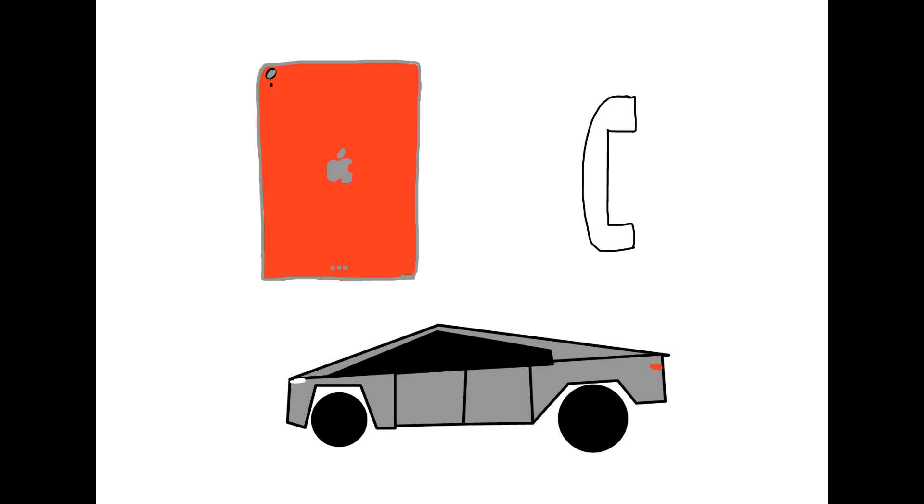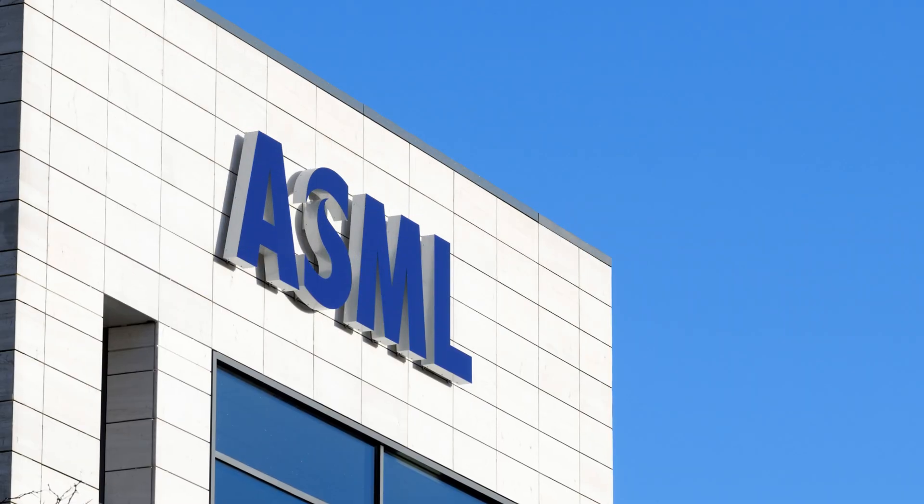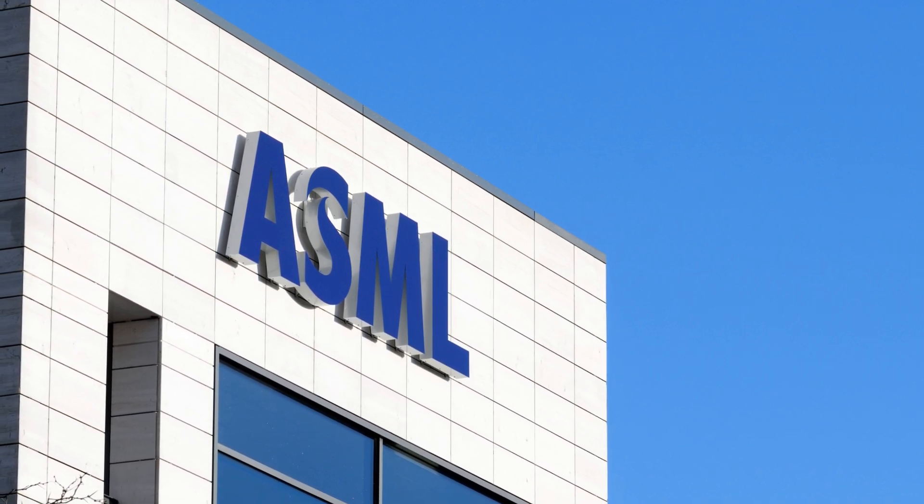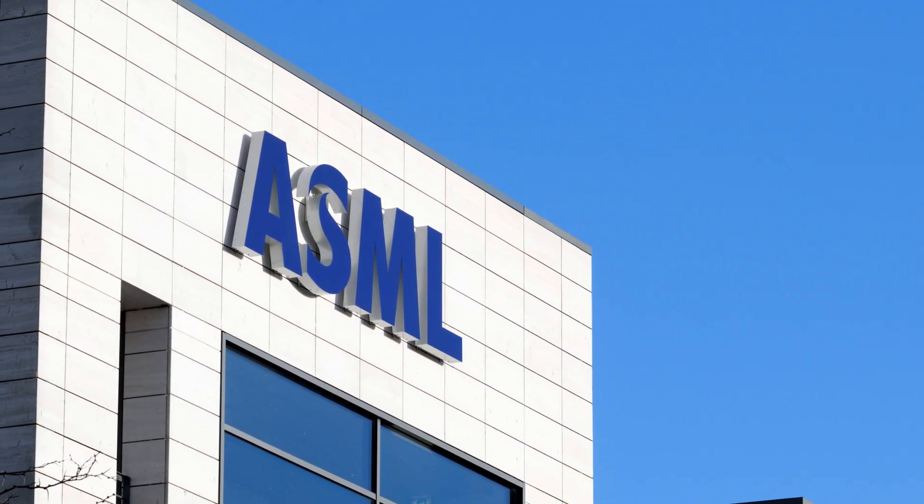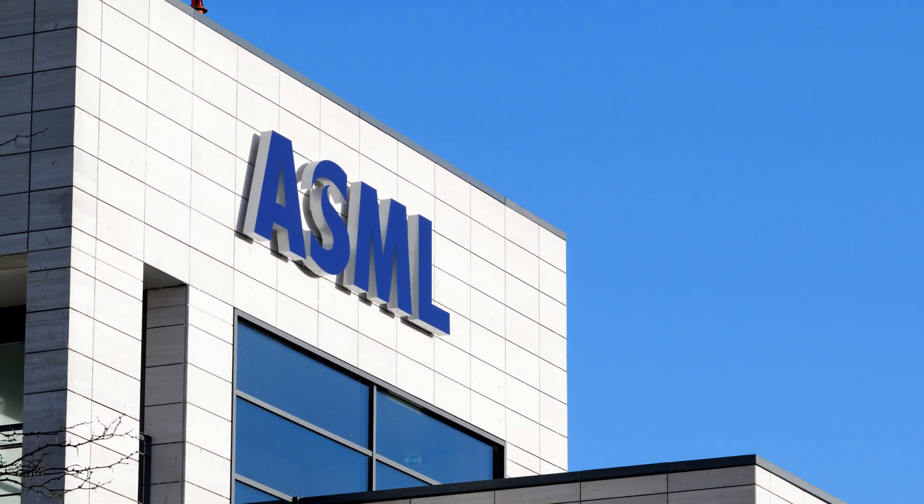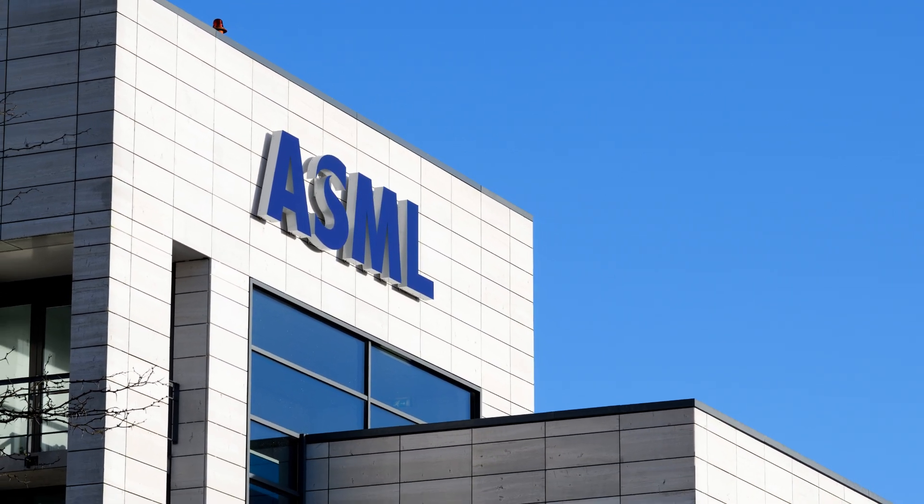For example, TSMC currently manufactures all of Apple's A-Series and M-Series chips, the ones in all Macs, iPads, and iPhones, as well as chips for tech giants like AMD and NVIDIA. At the end of the day, the key components that make up the computers that run the modern world are only able to be manufactured by one of three companies that can afford to buy the machines created by ASML, which is the only company in the world who makes extreme ultraviolet light lithography machines.